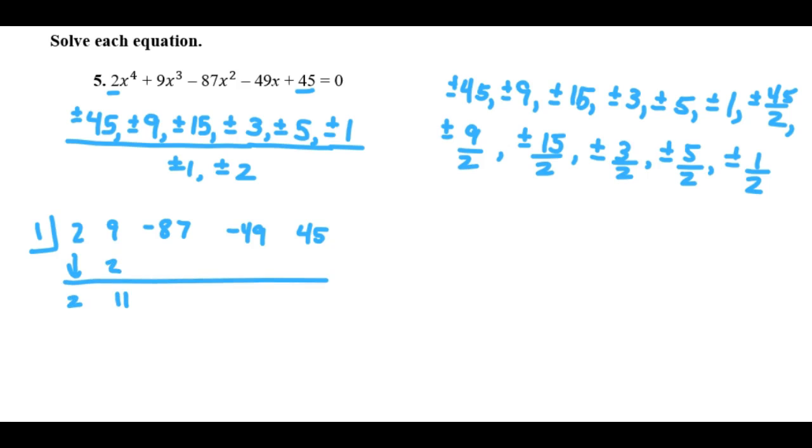we get 11, and negative 87 is going to give me negative 76. And then we have negative 76, and that would give me negative 125. So yeah, as you can see, you can probably start to get the hint that this is not going to give you a remainder of 0.